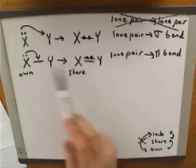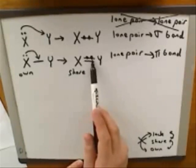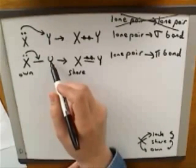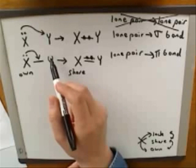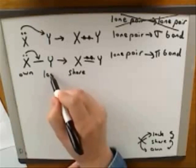So if we follow this pair of electrons, in this picture the X was owning them as a lone pair, but in this picture the X is sharing them as a pi bond. How about the Y? What's the relationship between the Y and this pair of electrons over here? The Y lacks those electrons.